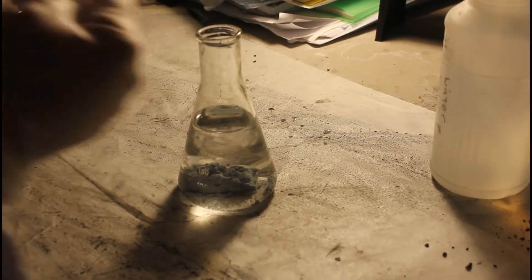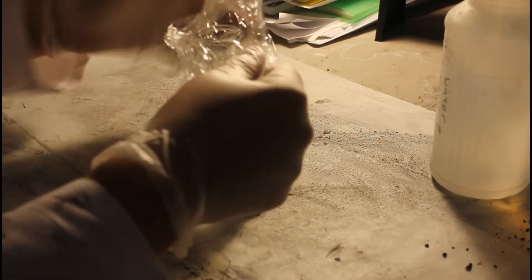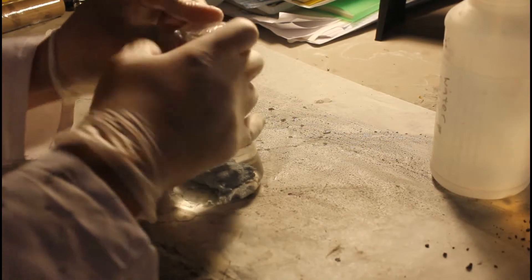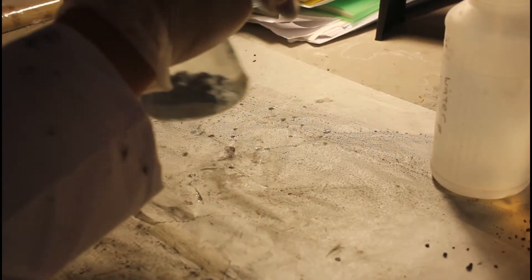The flask is then topped with plastic wrap and shaken vigorously to wash the zinc particles. This is done multiple times to try and dissolve off as much potassium hydroxide as possible. You will notice a white powder remains in suspension after the flask is shaken.